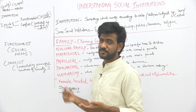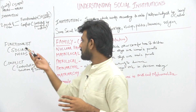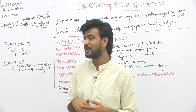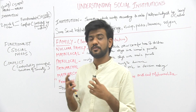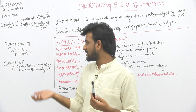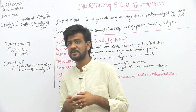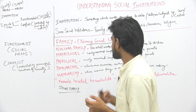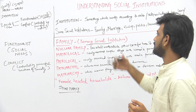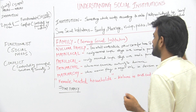We have discussed two points of view which define social institutions. First, the functionalist school, which says that family or any social institution exists to fulfil social needs. Second, the conflict school, which says that social institutions are controlled by powerful sections of people in society. We have also listed major social institutions: family, marriage, kinship, politics, economics, and religion.